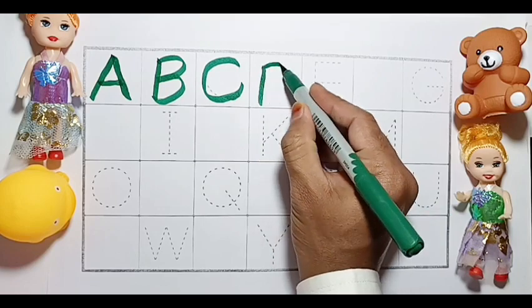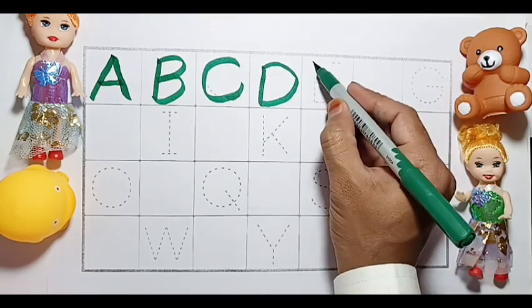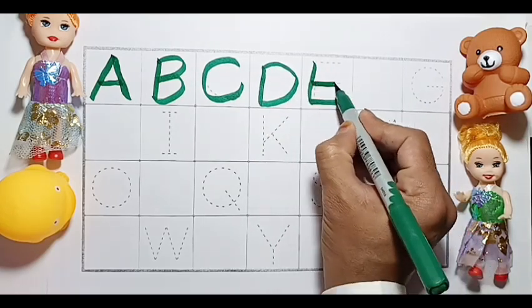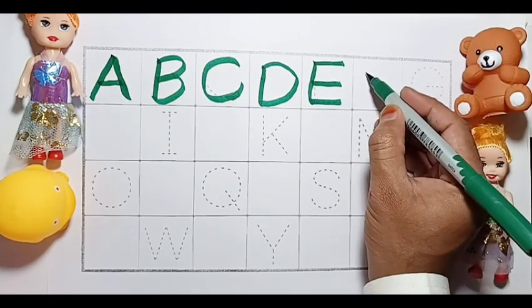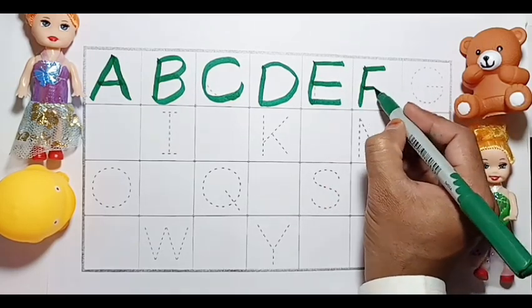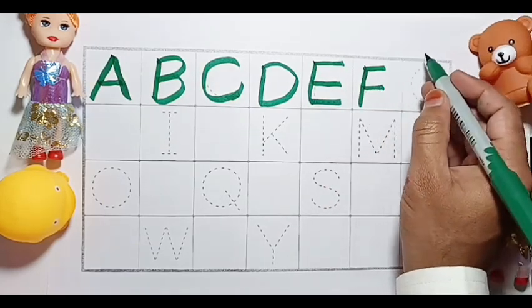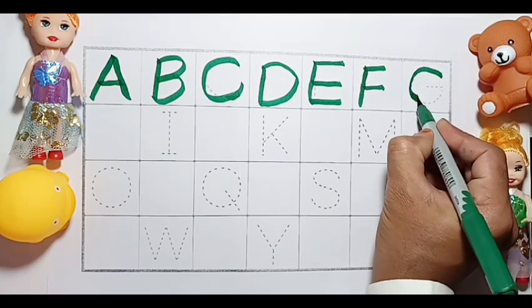D D D for Dog. E E for Elephant. F F for Fish. G G G for Good.